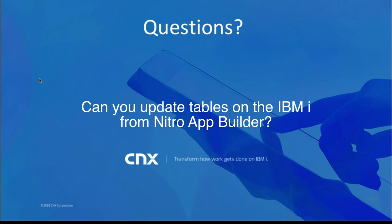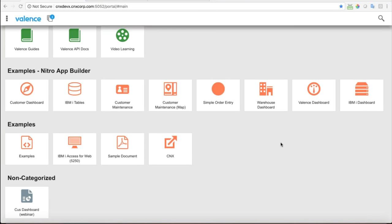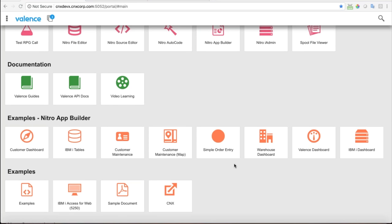Next question: 'Can you update tables on the IBM i from Nitro App Builder?' Excellent question — yes. Nitro App Builder is a true app builder, not just a business intelligence tool. Although many customers write BI apps like the customer dashboard, you can quite easily do update grids. It has a form creator where you can design forms and update data. I would encourage attendees to install Valence and look through all the sample applications — one of them is a simple order entry app where you can add line items to an order, update order header information, and start a new order.